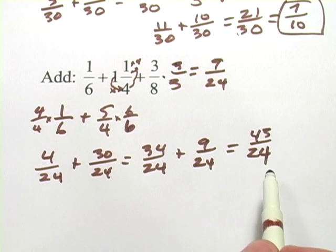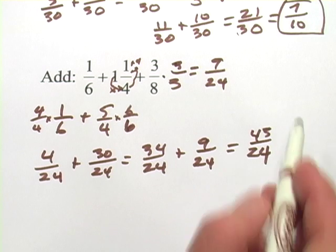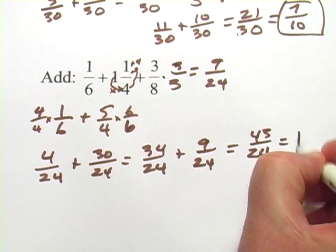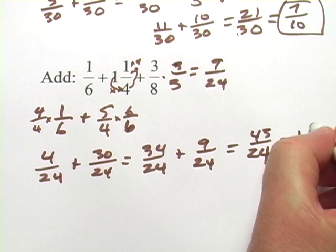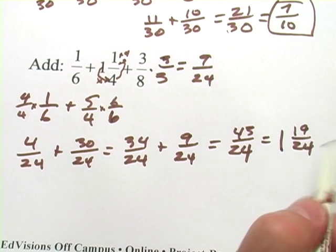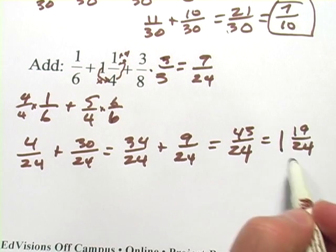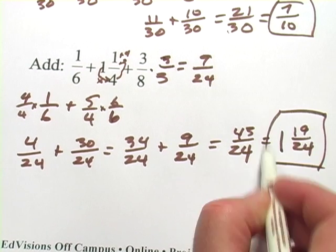I can take 24 24ths out of there. And if I do that, I'm left with 24 24ths is 1, and then I'm left with 19 24ths. And I don't think I can divide the top and the bottom by anything in common here. So I think this is already as simple as I can make it. So that would be my answer, 1 and 19 24ths.